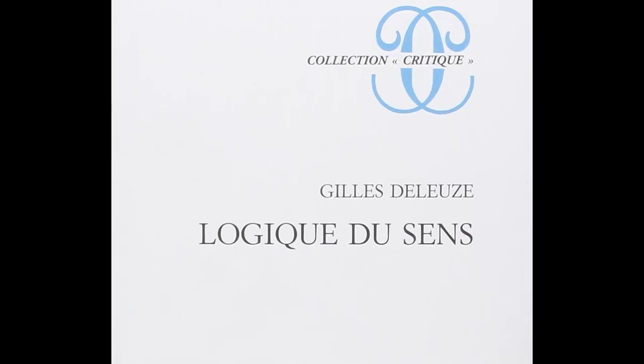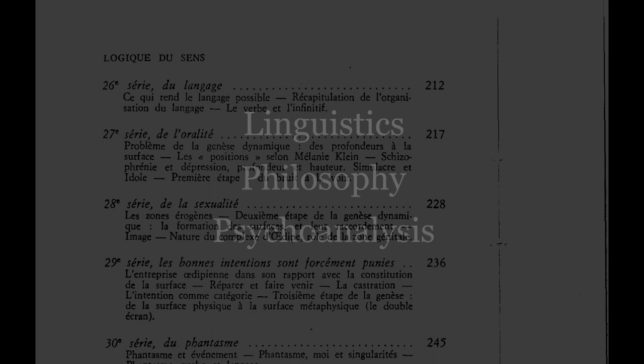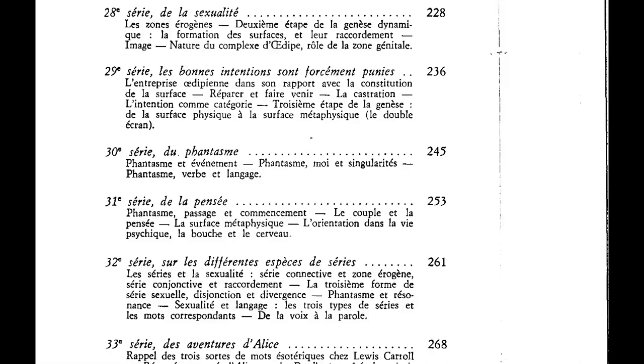Deleuze published his book Logic of Sense in 1969, and in it he discusses the problem of sense from three perspectives: linguistics, philosophy, and psychoanalysis. The book does not have parts like a classical work of philosophy, but is composed of series which are a little bit like chapters, and there are 34 of them in the whole book.